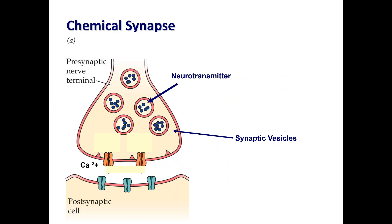Welcome to part two of this lecture on the nervous system. In the last lesson we talked about the synapse, which is the space between the end of a neuron and the next neuron or the effector cell. Within this module, the post-synaptic cell will be a muscle cell or muscle fiber. The synapse is the space in between the two, and we have two types of synapse.